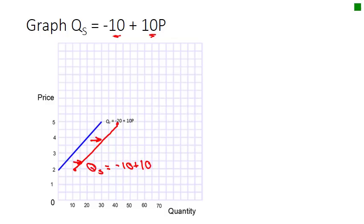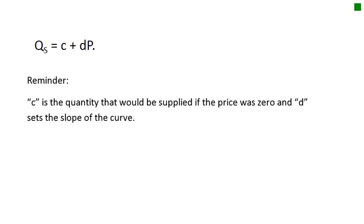For a supply curve, we use the letters c and d. C is the quantity that would be supplied if the price were zero, and d sets the slope of the curve.